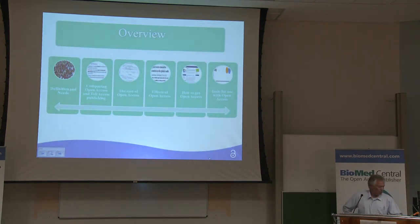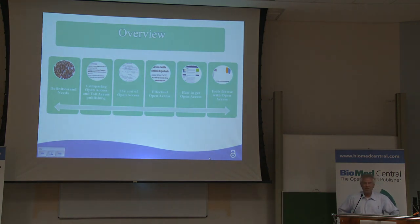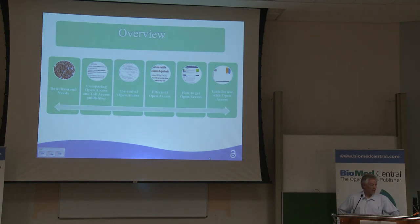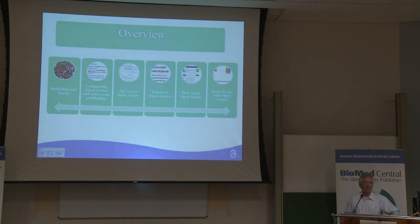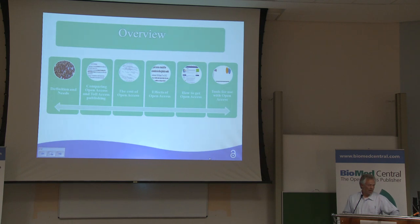The overview of my talk is that I will first talk about the definition of open access that I use, and that a group of open access advocacy people is using. Then I will compare open access and the toll access publishers, and have something to say about the cost of open access. Then I will go to the effects of open access on several areas, and then to how we can get open access — what do we actually have to do? And then I have a brief talk about scientist communities and tools that you can use in research and working with databases.